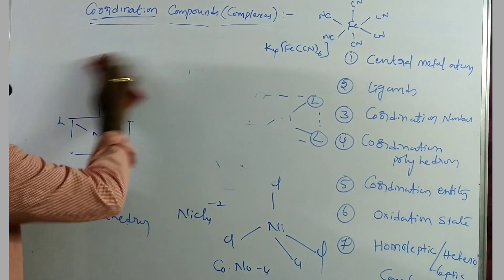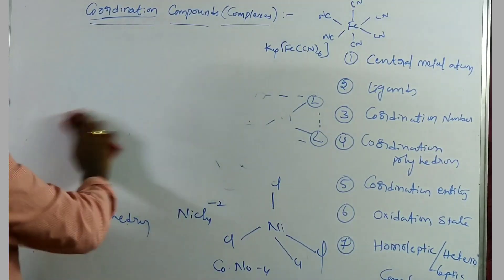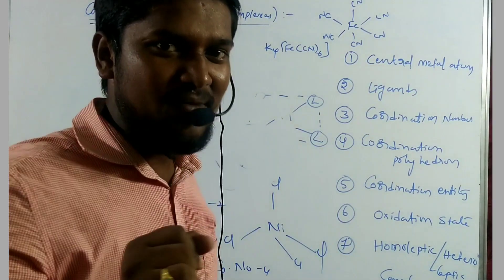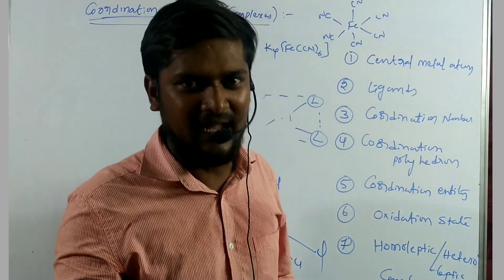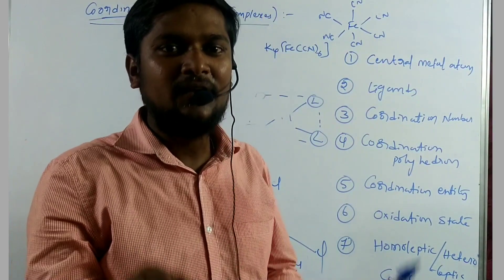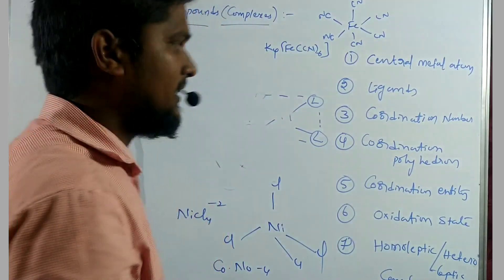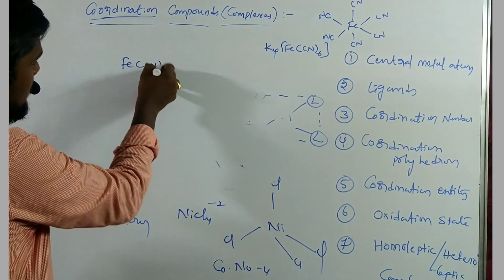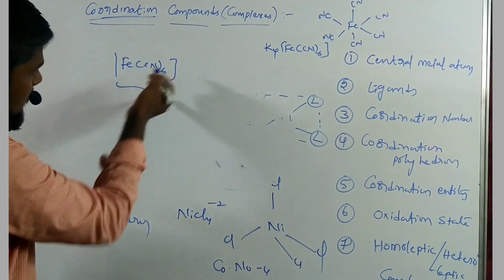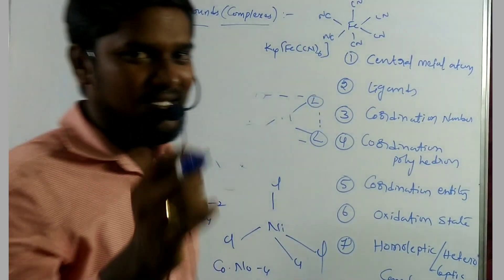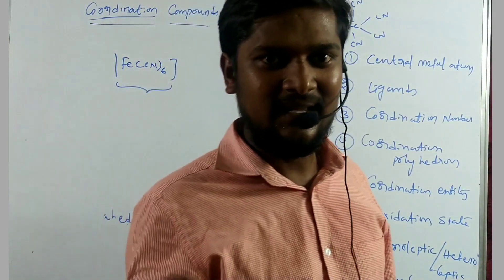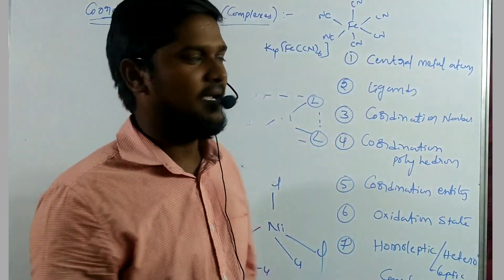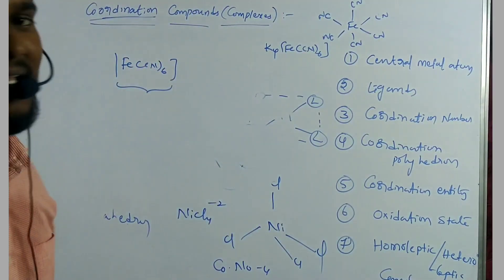The fifth term is coordination entity. The central metal atom and the total number of ligands enclosed in the square bracket are called the coordination entity. For example, [Fe(CN)₆] is the coordination entity — the total number of ligands as well as the central metal atom enclosed in square brackets.